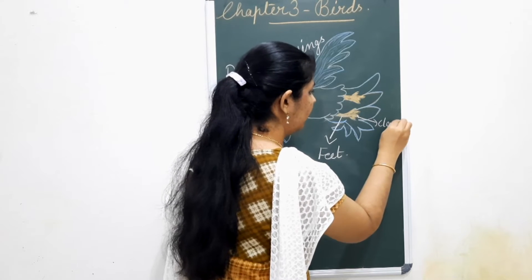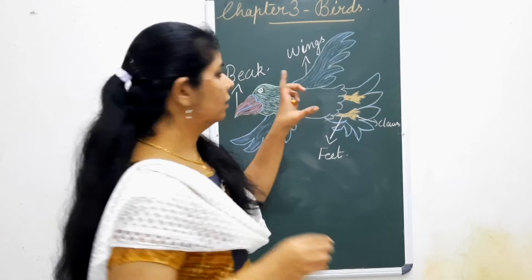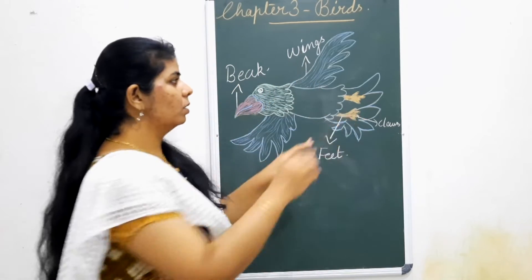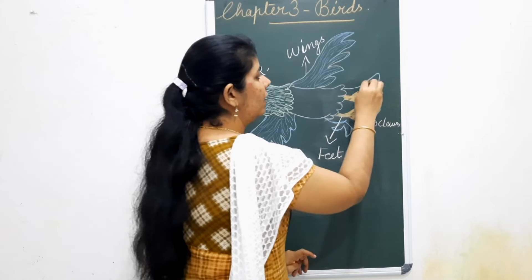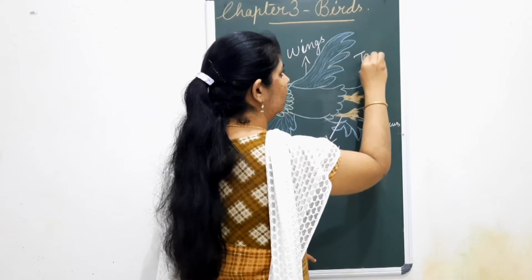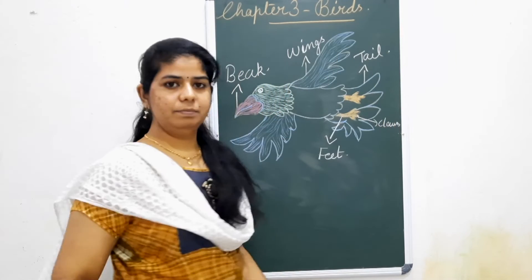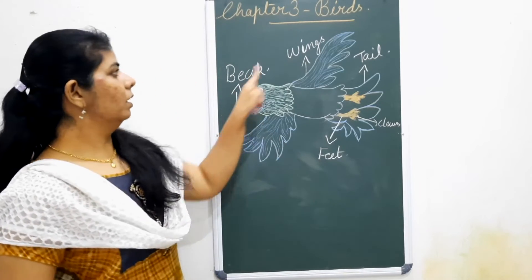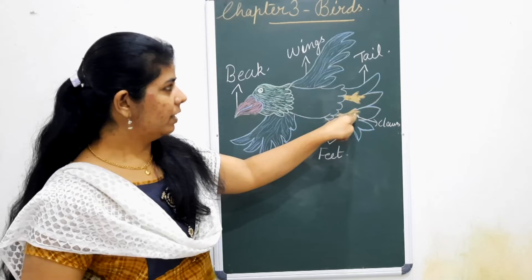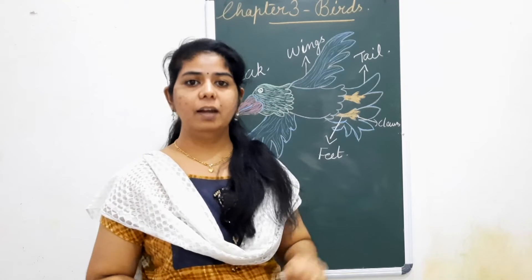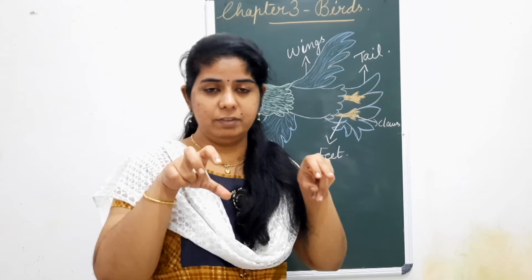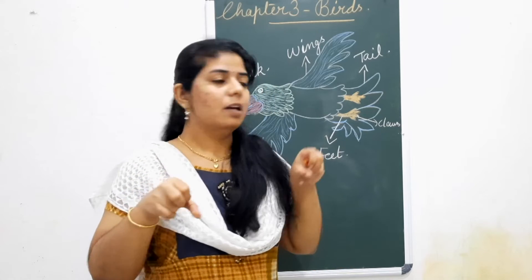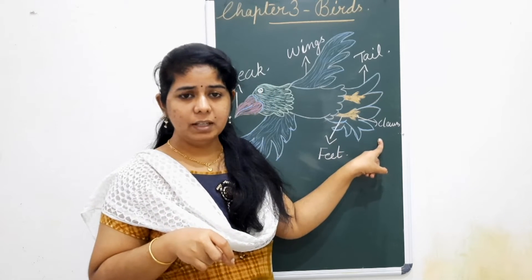So the main body parts of the bird are the beak, wings, feet, and also the tail. On their feet they have long curved nails called claws, which help them to catch their prey. That is called the claw.